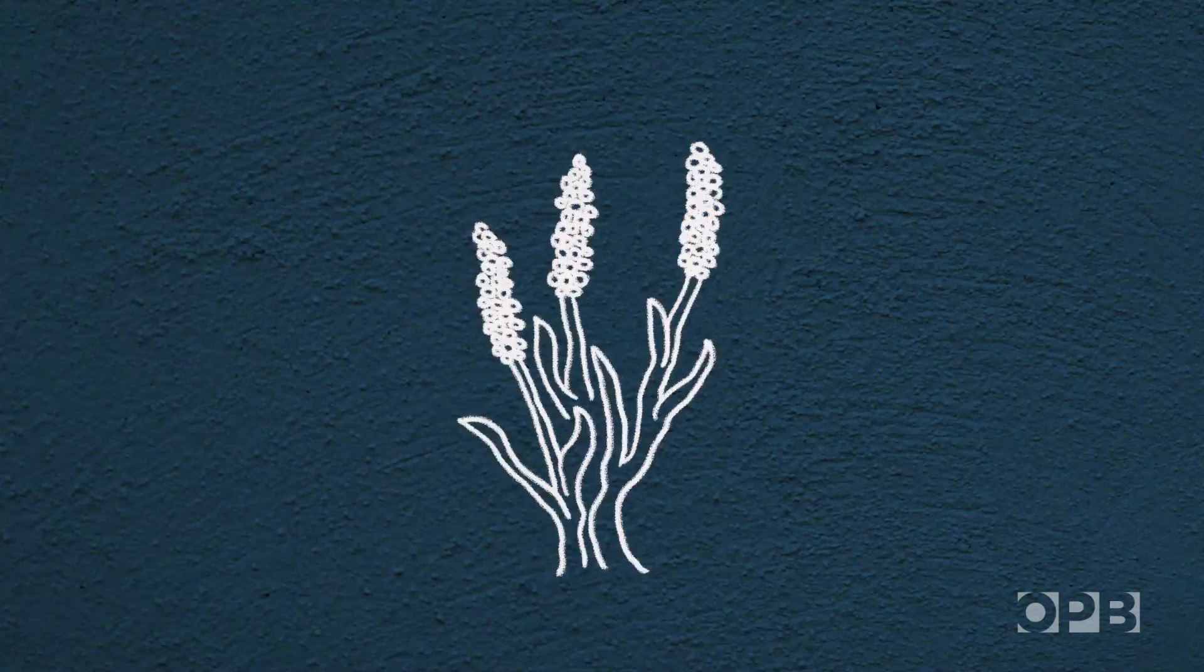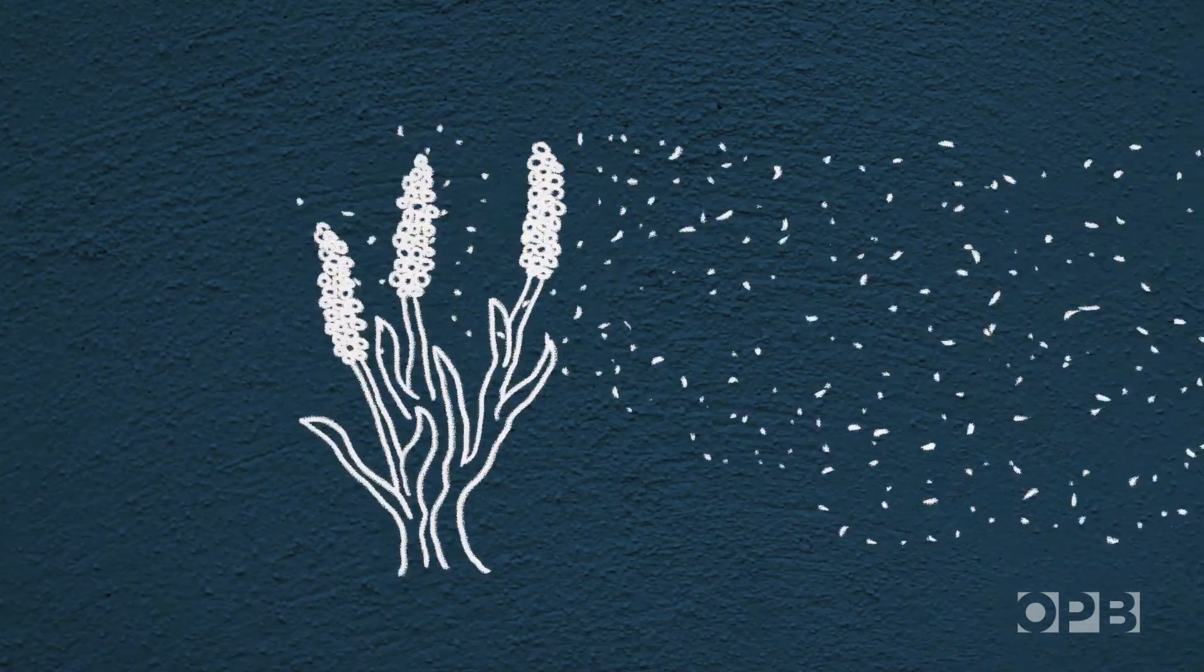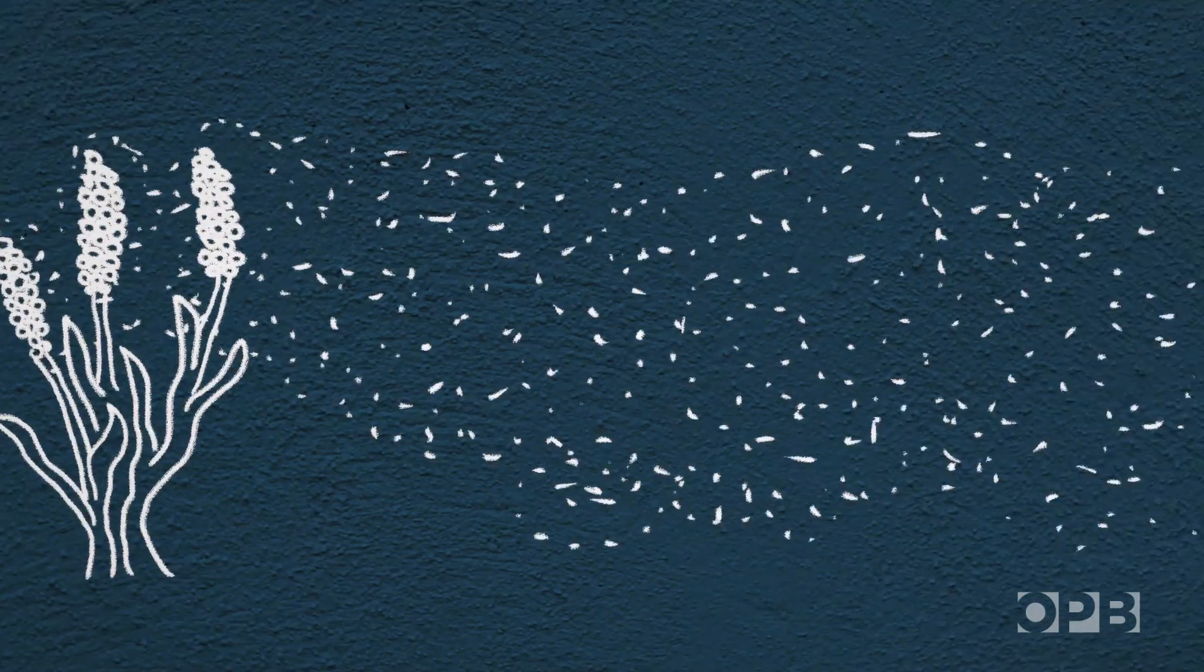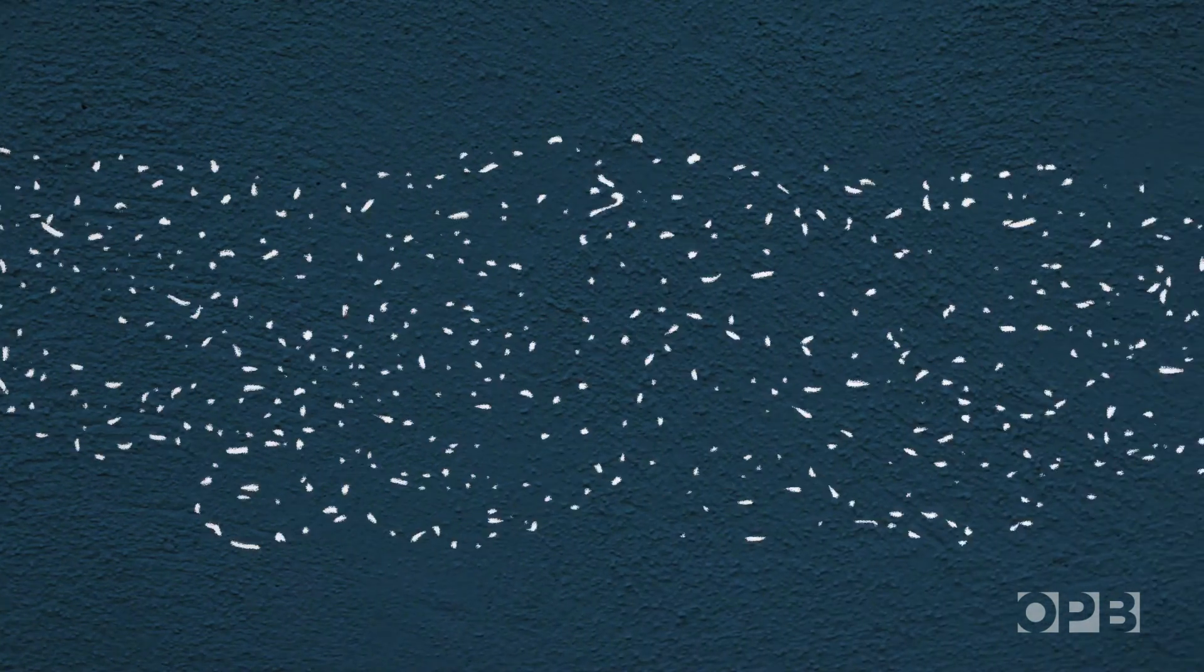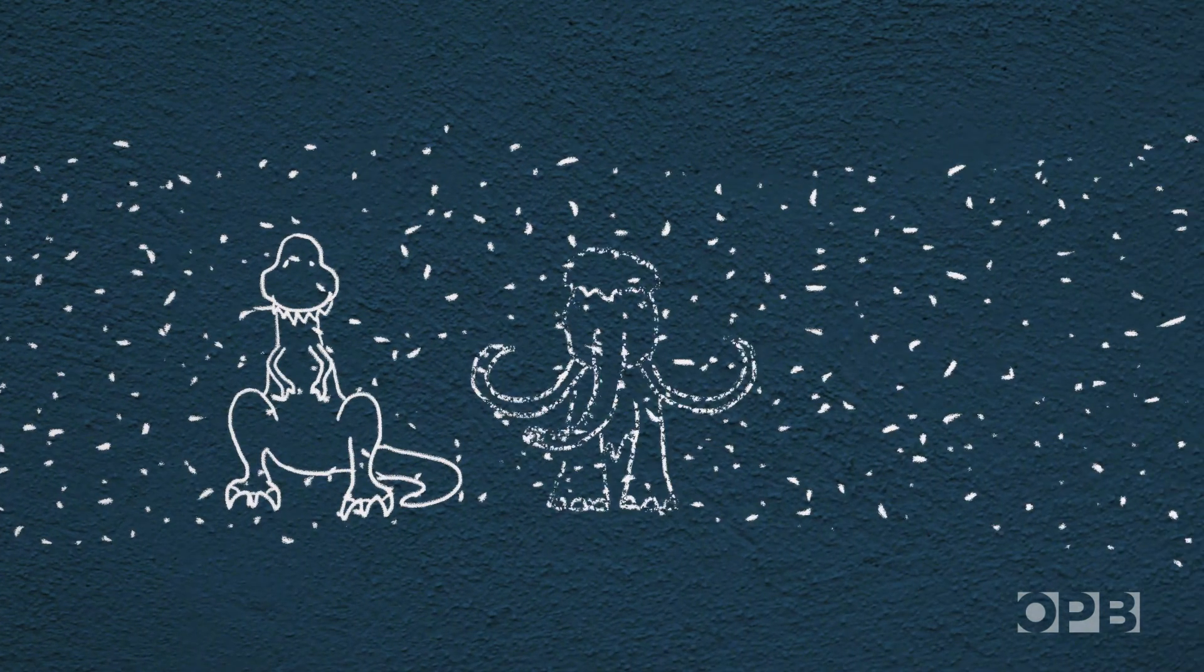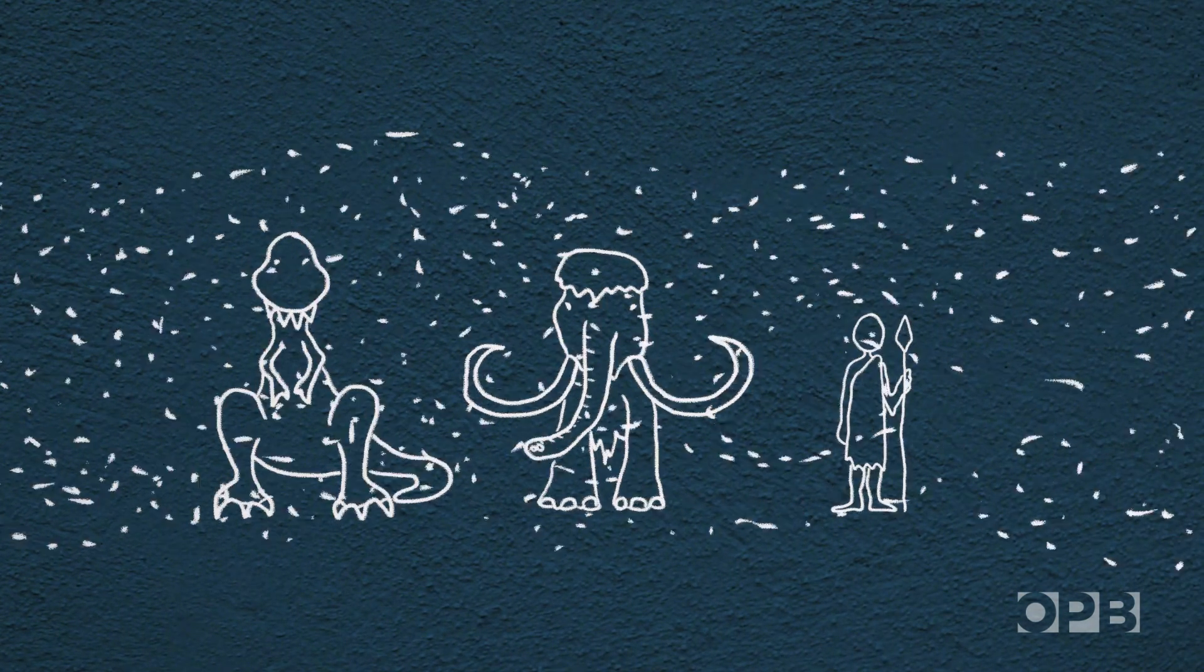To find a mate, a single plant has to produce billions of grains of pollen, and only a tiny fraction find their target. That leaves a lot of extra pollen lying around, which for pretty much every land animal ever, wasn't really a problem.